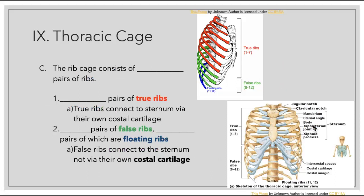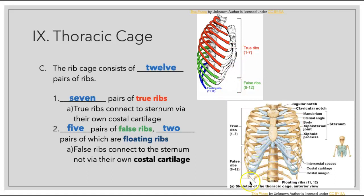Our rib cage consists of 12 pairs of ribs, which we can classify into groups. First, we have the true ribs — seven pairs that connect to the sternum via their own costal cartilage. Then we have the five pairs of false ribs, ribs 8 through 12, which connect to the sternum not through their own costal cartilage but by attaching to the costal cartilage above. Included among the false ribs are two pairs of floating ribs, which do not have any costal cartilage attachment — just a little bit of hyaline cartilage at the ends.